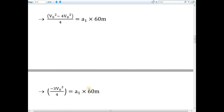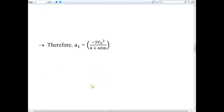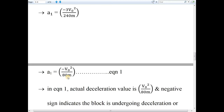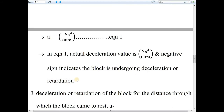Bringing 60 to the denominator of the LHS, we get: A1 = −3V0² / (4 × 60) = −3V0² / 240. Since 240 is 80 times 3, this simplifies to: A1 = −V0²/80 meters. Consider this as Equation 1. The actual deceleration value is V0²/80. The negative sign simply represents that the small block is undergoing deceleration. For calculation purposes, substitute V0²/80, not the negative sign.